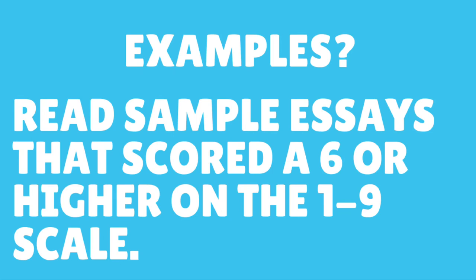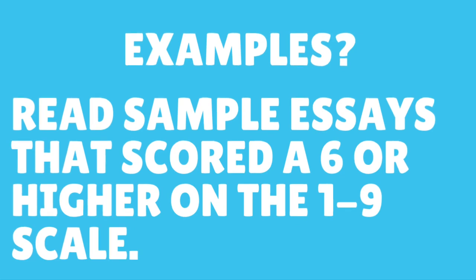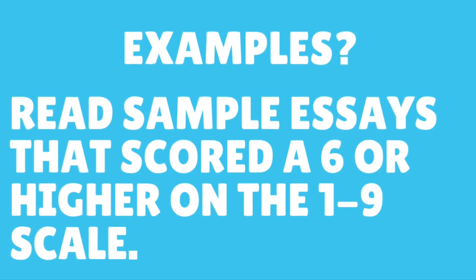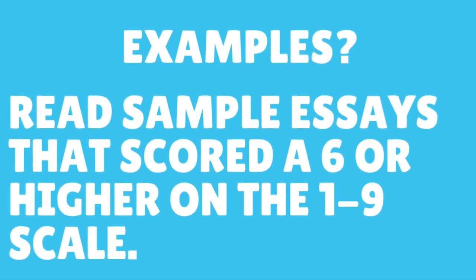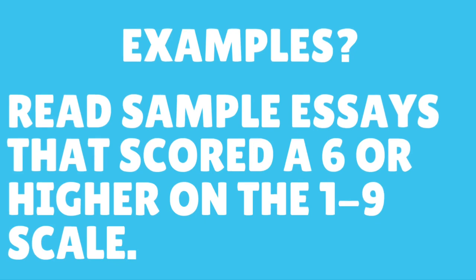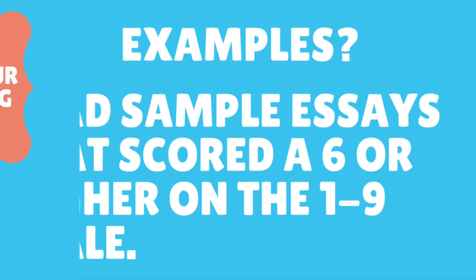One downside when the College Board redesigns a course is that information comes out in pieces. At the time of recording, we have the rubrics but not a direct correlation showing what an essay looks like on the 1 to 6 scale. However, if you look at the new rubric and previous rubrics there's lots of overlap in the wording. My recommendation is to look at released sample essays that previously scored a 6 or higher on the 1-to-9 scale — presumably, based on the wording correlation, those essays would have a defensible thesis.